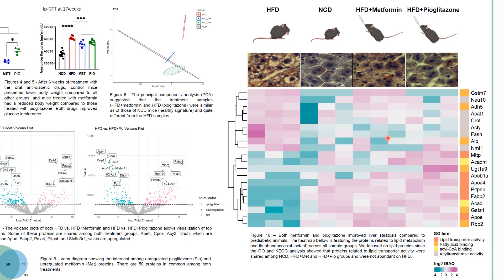The heatmap shows proteins associated with lipid transporter activity, and these were shared among the normal chow diet group — our control — and the metformin and pioglitazone-treated groups. On the contrary, proteins related to acid transferase activity, which plays a fundamental role in the decision of whether fatty acids are stored, were up-regulated in the high-fat diet group.